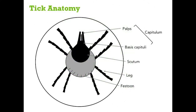Here's a basic diagram of tick anatomy showing the features that you can see without a microscope. On the top side of the tick, you can see the palps and the basis capituli, which together form a structure called the capitulum. You can also see the legs. Adults and nymphs have eight legs, while larvae, which is the youngest stage, only have six. Festoons are present along the bottom — these aren't present on all species, but you can easily see them on those that do have them. And finally, there's the scutum, which can be ornate, meaning patterned, or inornate, meaning solid in colour.